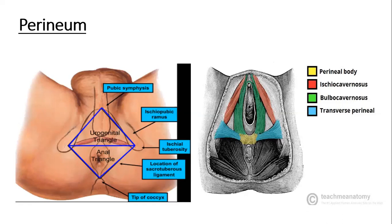There is a very important anatomical structure among the contents of the anal triangle: the pudendal nerve. It supplies the whole perineal compartment and is very important from an exam point of view. It gives rise to the pudendal nerve block.